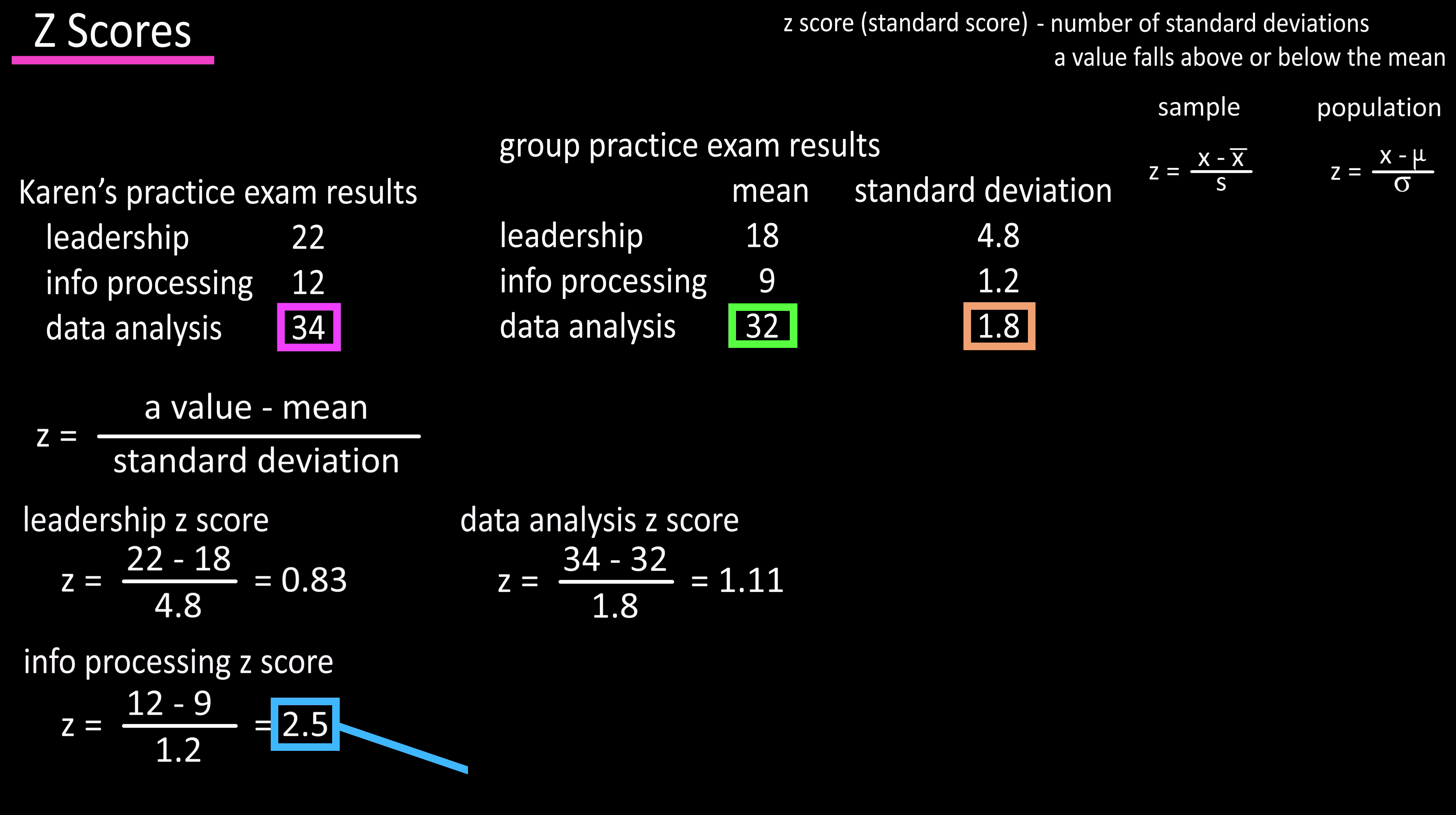Since her z-score of 2.5 in info processing is the highest of the three, her relative position in this category is higher than the other categories, and her z-score of 0.83 is lowest in leadership. Her relative position in this category is her lowest.